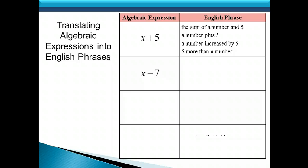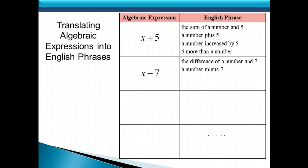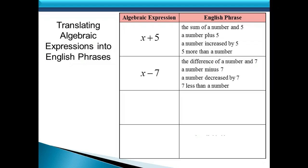Here's another one: x minus 7. We have subtraction, so think of all the different words and phrases for subtraction. We could say: the difference of a number and 7, a number minus 7, a number decreased by 7, or 7 less than a number. Notice that the order is reversed on that last phrase, because it would be incorrect to say a number less than 7, when it's really the 7 that's being subtracted from x.